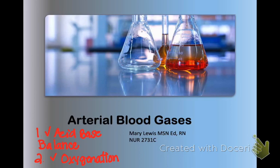Arterial blood gases regulate acid-base balance and oxygenation. The body maintains a steady balance between acids continually during normal metabolism. The bases neutralize and promote the excretion of acids, so the normal body balances, neutralizes, and excretes the acid.